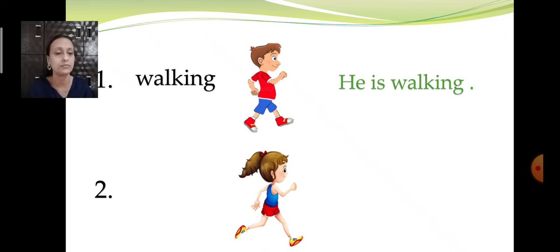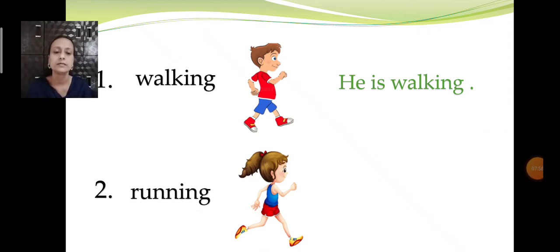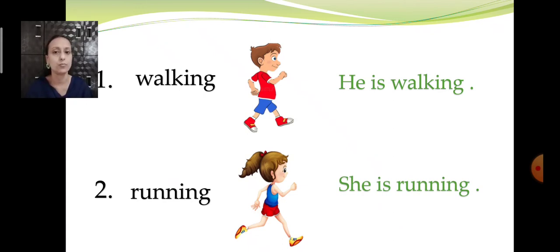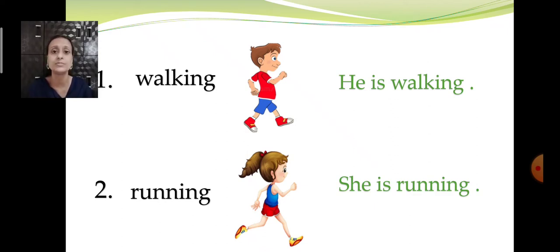Now you have to do the second one. Along with the writing part, you will learn the spellings also. The girl in the second picture is running. How do we write the sentence? She is running. For a boy we use 'he', and for a girl we use 'she'. She, next will be 'is' — the helping verb — and then 'running'. Whenever you are writing he, she, it, they, we have to use 'is' or 'are'. She is running. Running spelling is R-U-N-N-I-N-G.